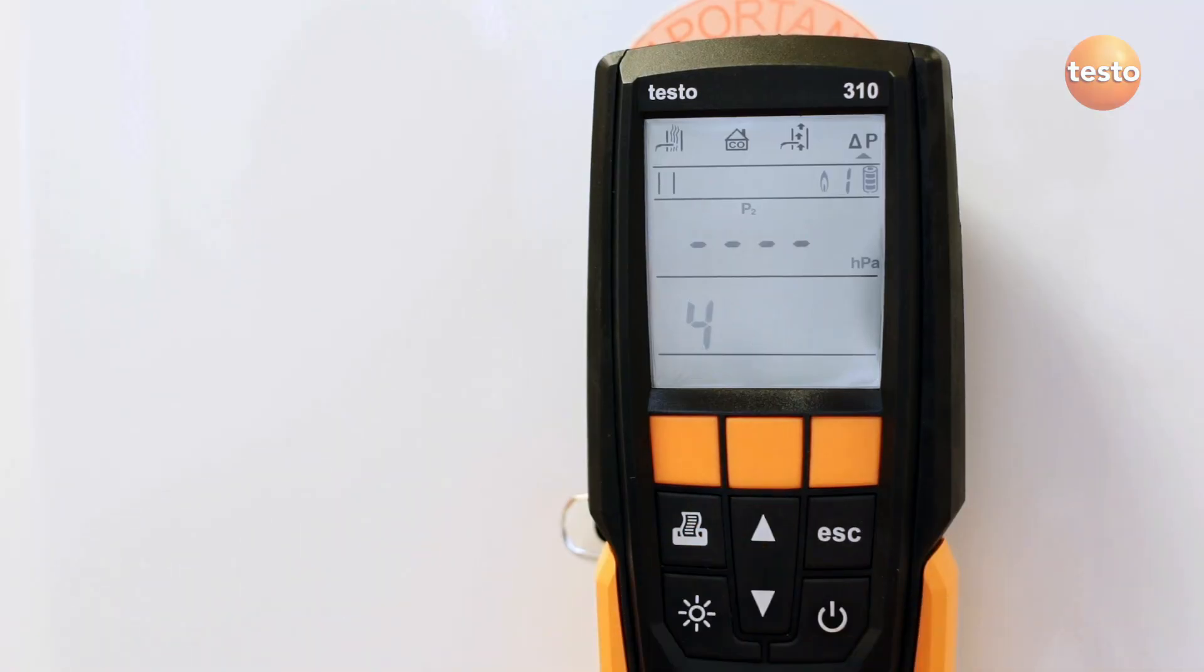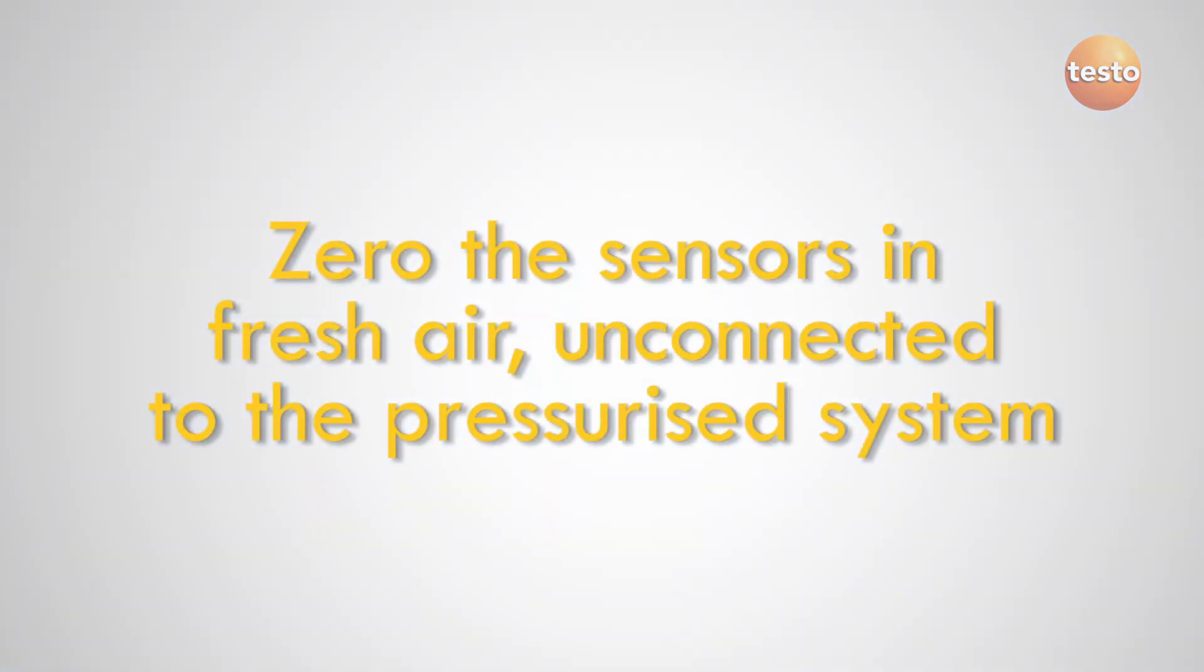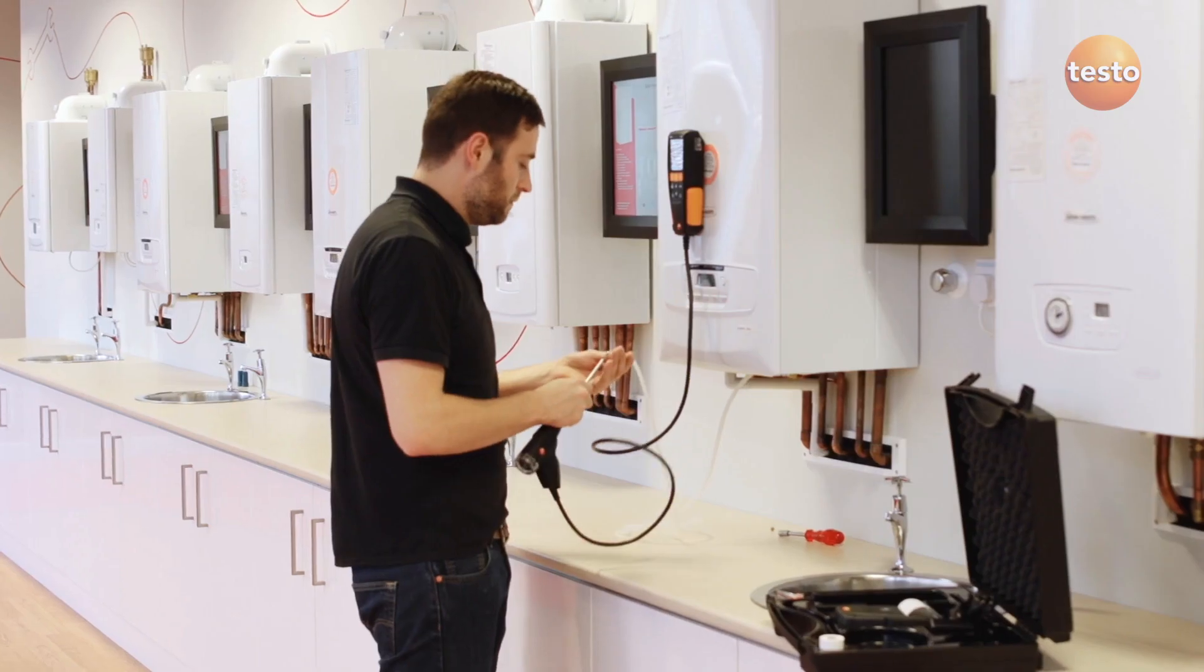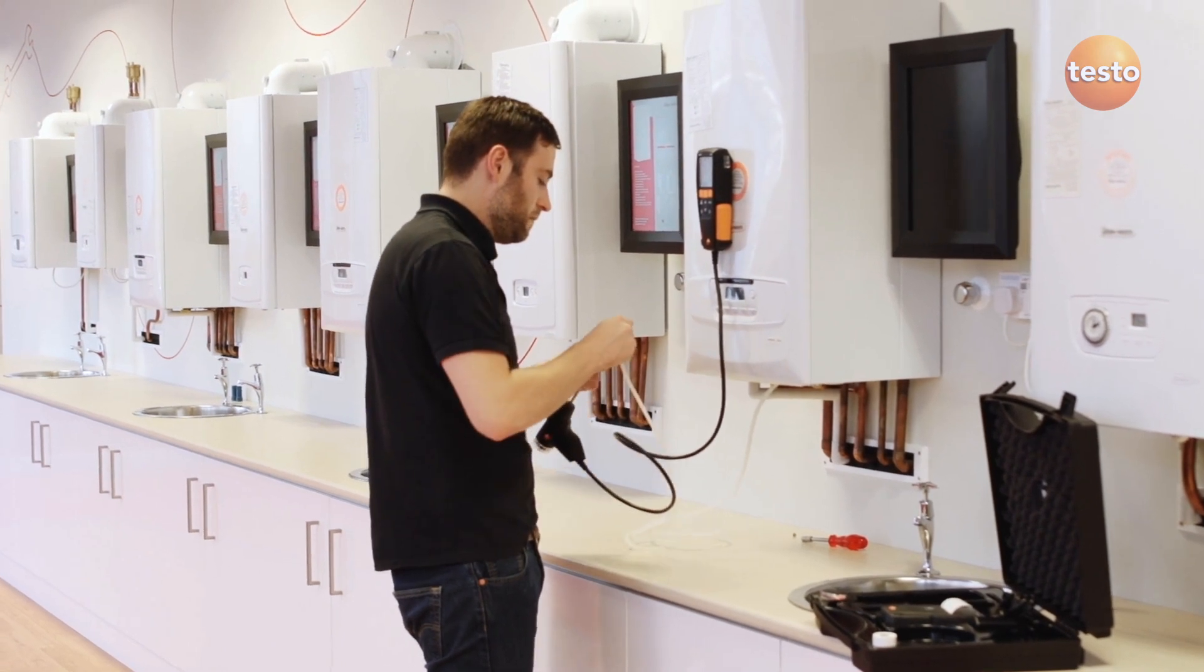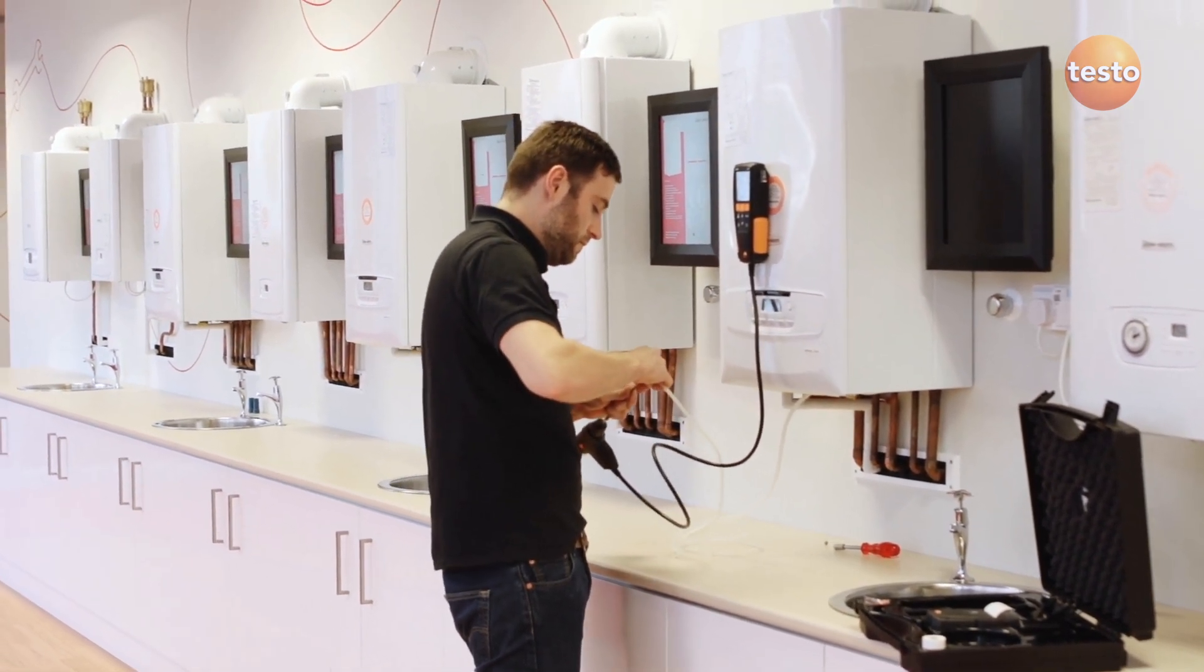Once the plug is in place, press start to zero the pressure sensor before connecting the probe to the gas supply. It's important that the sensors are zeroed in fresh air, not connected to the pressurized system. When the pressure sensor has been zeroed, you can fit the silicon hose to the probe and connect it to the test point to measure the gas pressure.